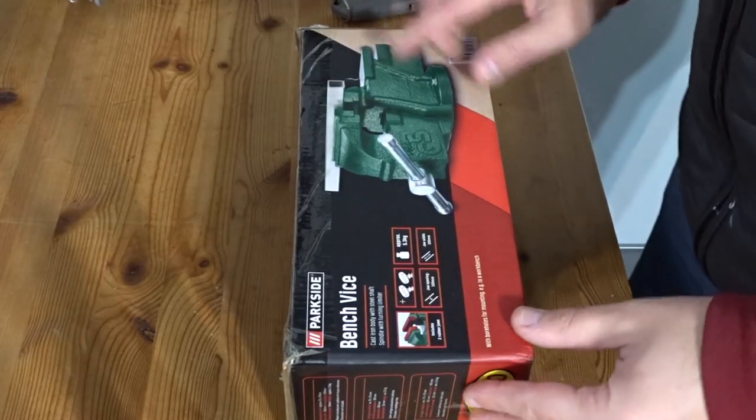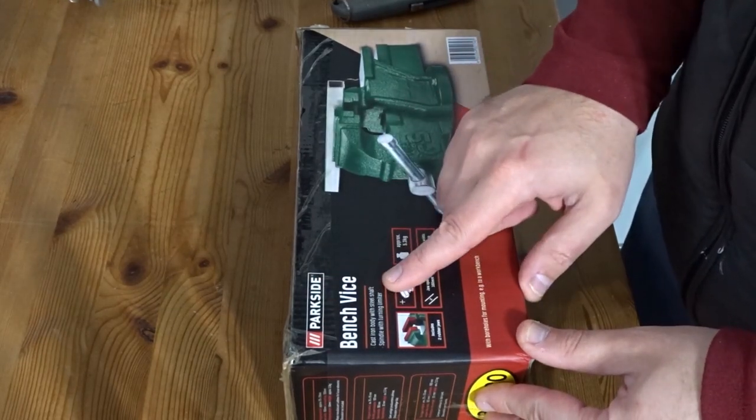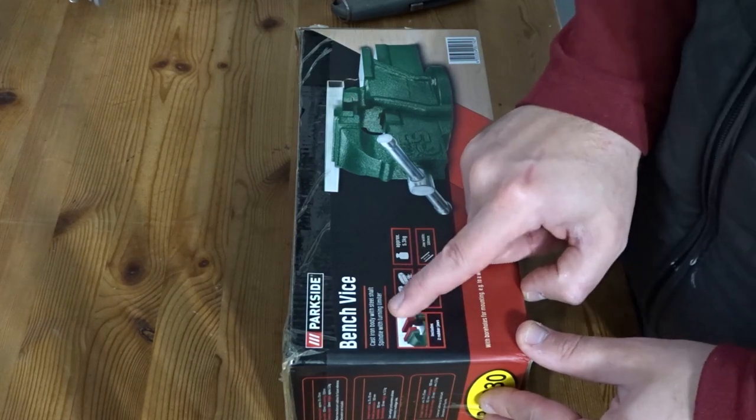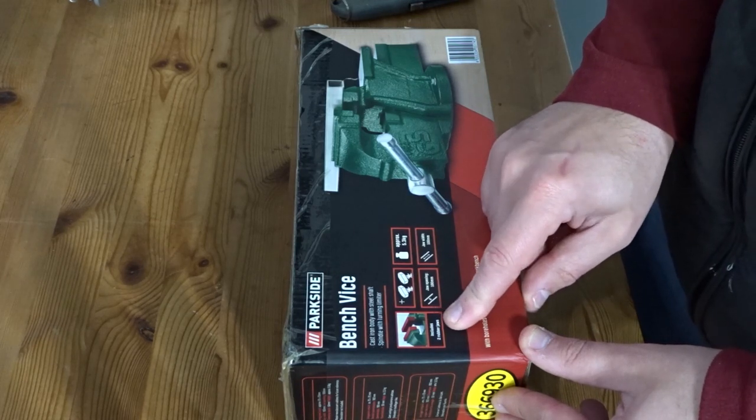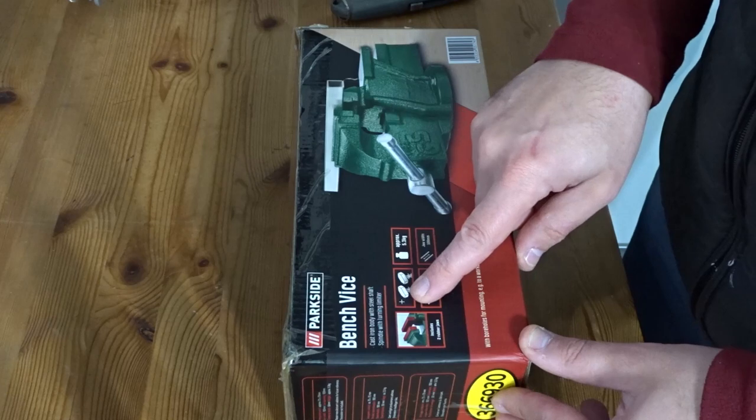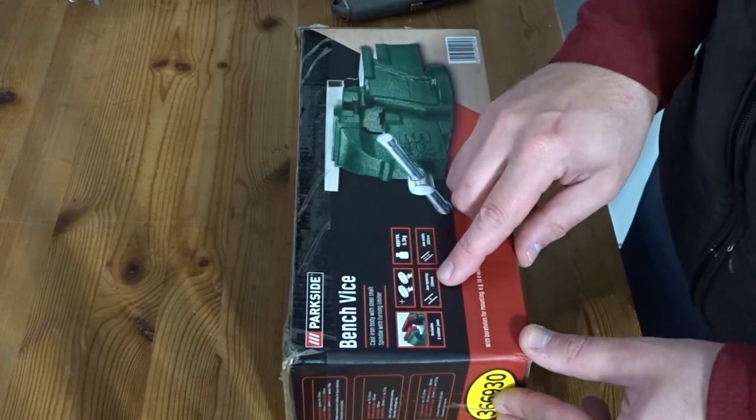Let's just take a look at the box before we cut the box open. So Parkside bench vise, cast iron body with steel shaft spindle with turning limiter. It includes two rubber jaws and some of the bolts and things to connect it to a workbench.